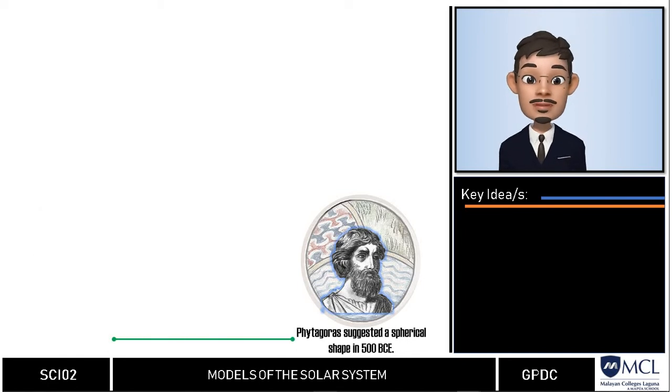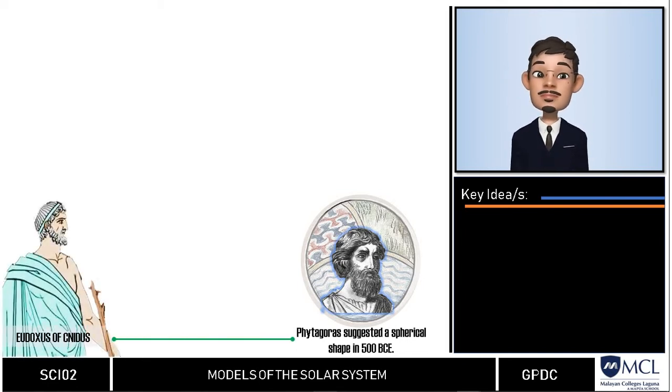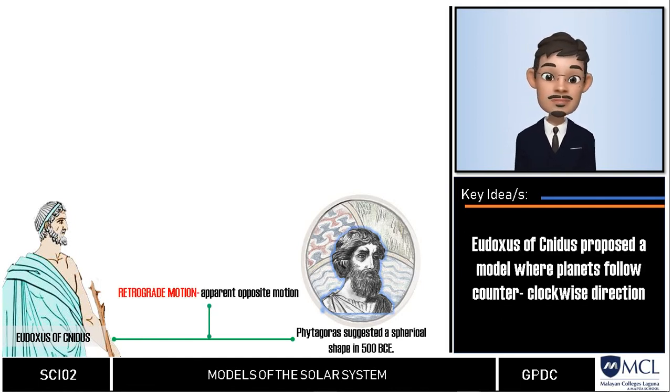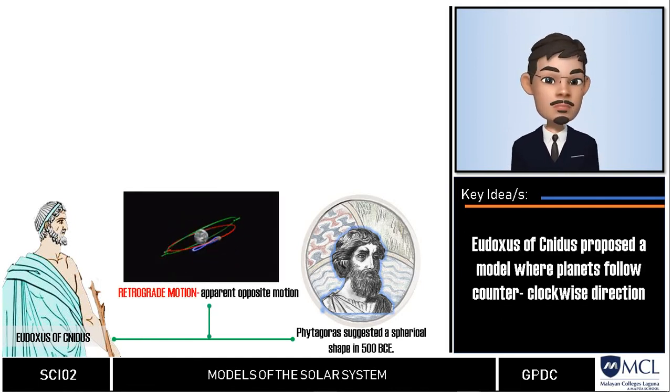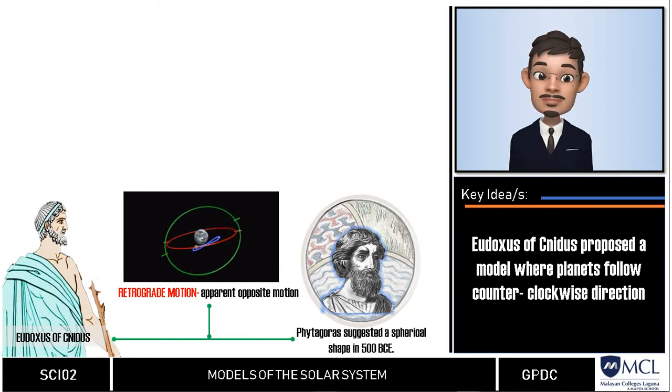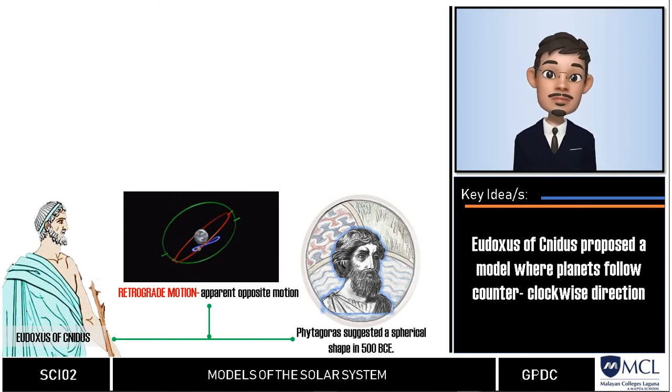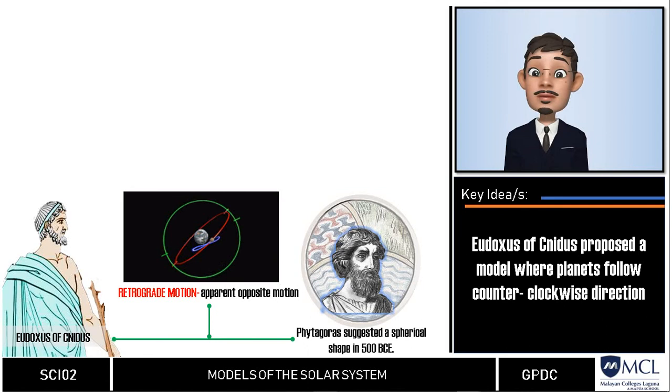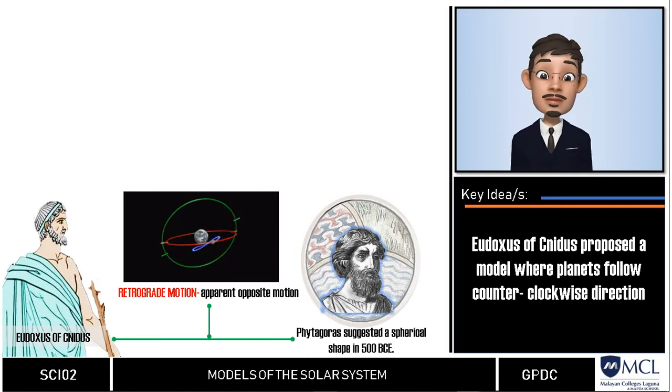Eudoxus of Cnidus, a student of Plato, presented the first mathematical theory of the universe about a hundred years later. Eudoxus proposed a model of the universe to explain the apparent opposite motion of some planets. This means that while other planets are moving in clockwise direction, others are in counterclockwise. He called this apparent opposite motion retrograde motion.